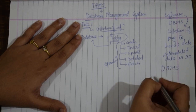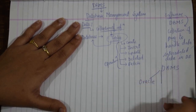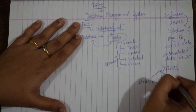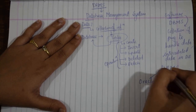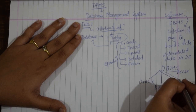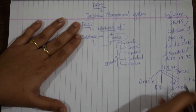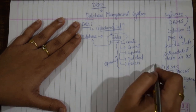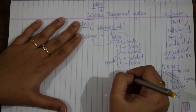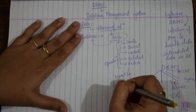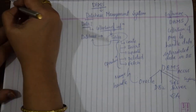There are different DBMS softwares available. You may have heard of Oracle, DB2, SQL Server, Access, Sybase, and many more. These are the different DBMS softwares using which you can manage or handle your database. Now moving to the basic terminologies.